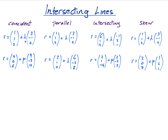Note my lambda and mu are different parameters, because if you put zero in here you get (1,1,2), and if you put zero in here you get (4,0,6), so I have to have a different parameter. Okay, that's coincident lines.